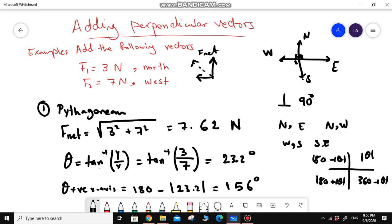My vector, or F net, will be pointing here at an angle of 156 degrees from the positive X axis. Let's look at this. Let's go to the top.